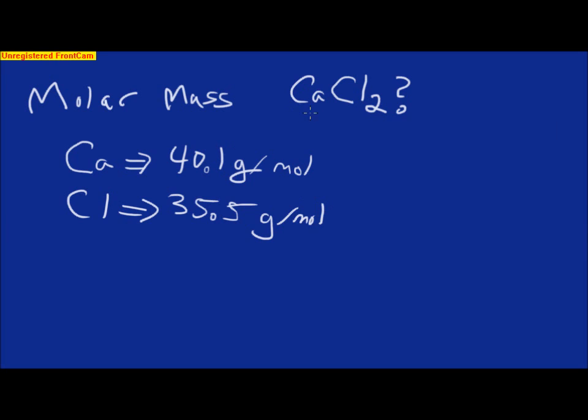If you look at my compound, I've got one calcium and I've got two chlorides. So, I need to multiply this number by 2. The total amount of what my molecule weighs is 111.1 grams for every mole of CaCl2.